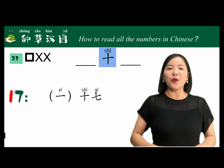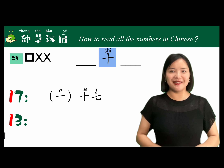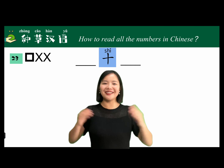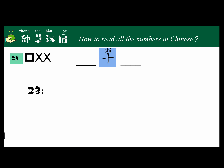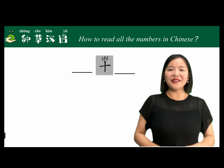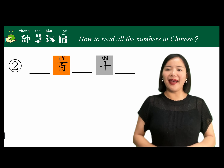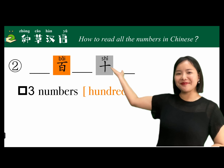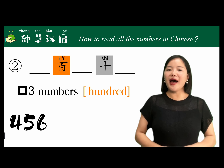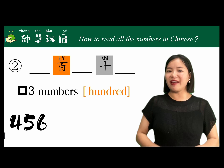And 13 we often read as 十三 (shí sān). Let's practice more: 23 is 二十三 (èr shí sān), 56 is 五十六 (wǔ shí liù), 40 is 四十 (sì shí). The second word is 百 (bǎi), which means 100. This is used for three-digit numbers.